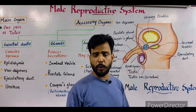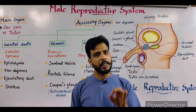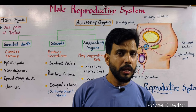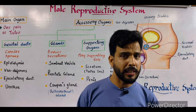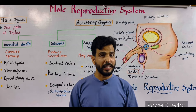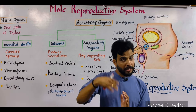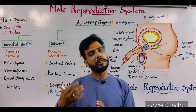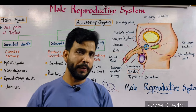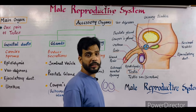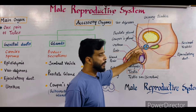Why are the testes present outside the abdominal cavity? Because inside the testes, sperm formation takes place. Sperms are produced inside the testes by the process of spermatogenesis, and for spermatogenesis the temperature inside the abdominal cavity is very high. That is the reason the testes are present outside the abdominal cavity — due to the lower temperature, sperm formation takes place easily.